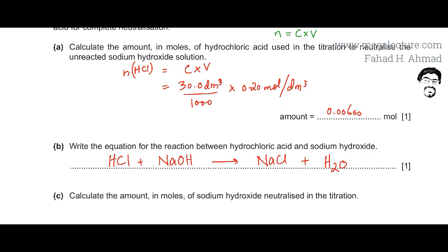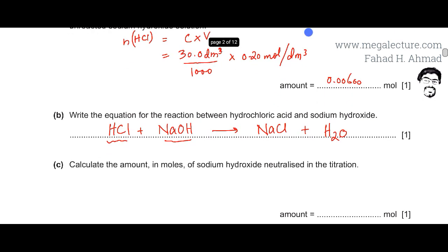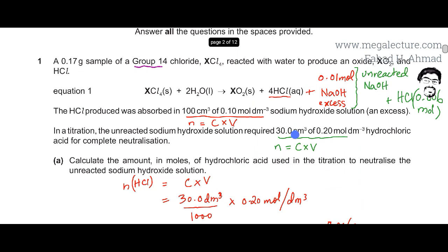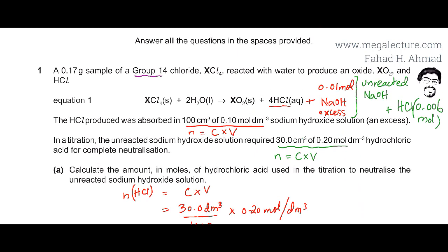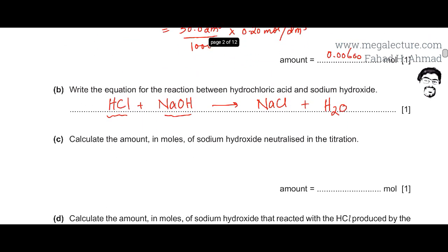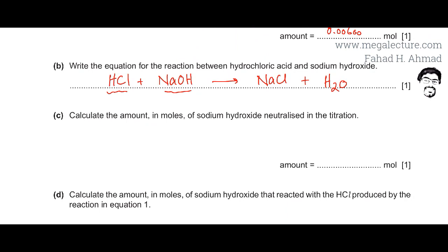Importantly, the ratio between HCl and NaOH in this equation is 1:1. So the moles of HCl and NaOH must be equal. Part C asks to calculate the moles of NaOH neutralized by the titration. Since HCl and NaOH have a 1:1 ratio, if HCl is 0.006 moles, then NaOH is also 0.006 moles.